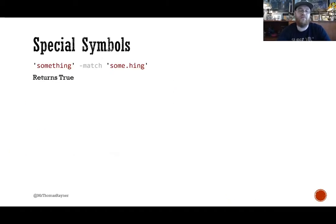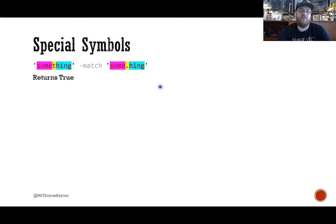Speaking of the period — this one returns true. The literal characters S-O-M-E are found, and then this dot represents literally any single character, followed by the literal characters H-I-N-G. So this returns true because that pattern is found in that string. You can see how if you wanted to match an actual period instead of any character, you'd have to do something different — you'd need to escape it with a backslash.